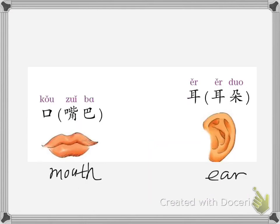This is mouth. In Chinese, mouth is kou. The writing is like this: this is the first stroke, this is the second stroke, and this is the third stroke. Ko, we also say kou. We will learn that in the future videos.